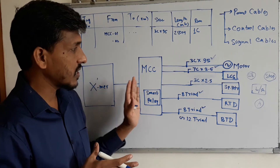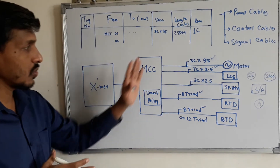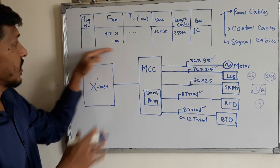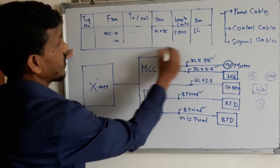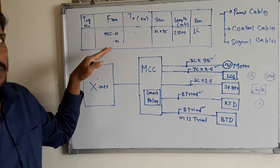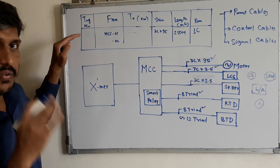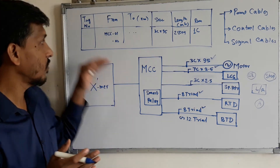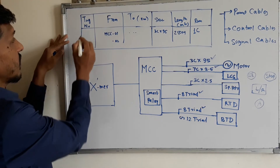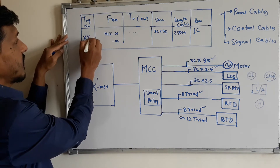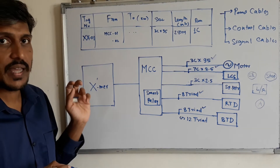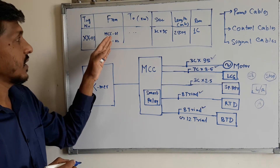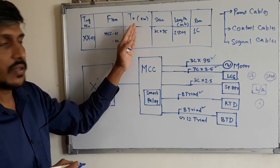Once you understand the cable types and have the cable sizes, you can complete the cable schedule. One important thing to note is that in a cable schedule you must mention tags for every cable. Based on the tagging philosophy, you assign a tag for each cable — for example, XX01.